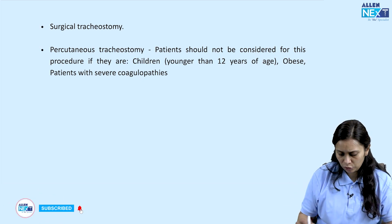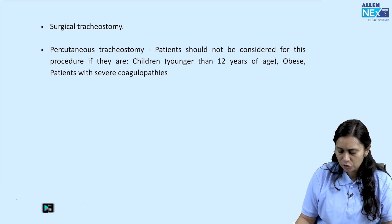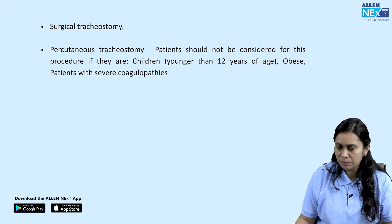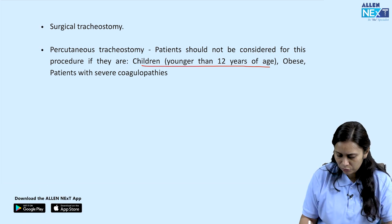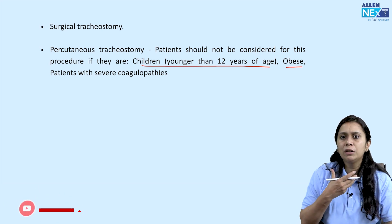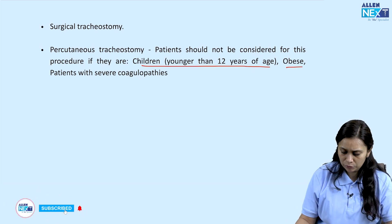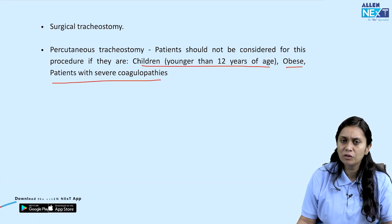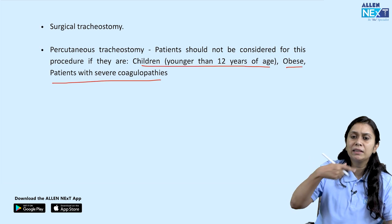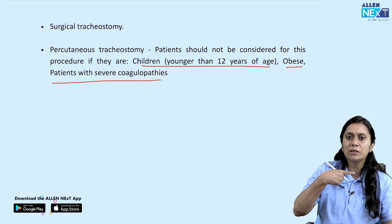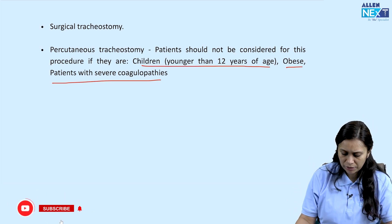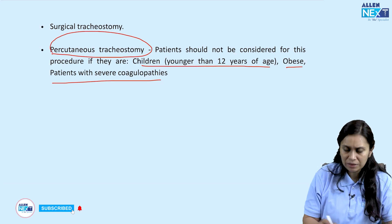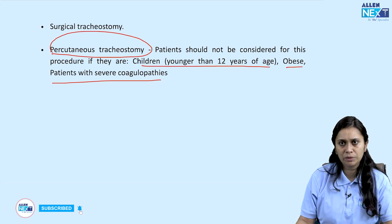The other method is percutaneous tracheostomy, using the Seldinger technique to dilate and place the tracheostomy tube. Contraindications to percutaneous tracheostomy include: children less than 12 years, obese patients where good anatomical visualization is difficult, and patients with severe coagulopathy due to the risk of bleeding in this highly vascular structure.